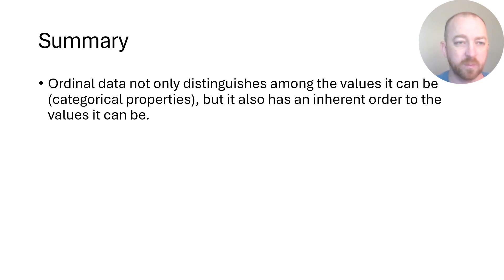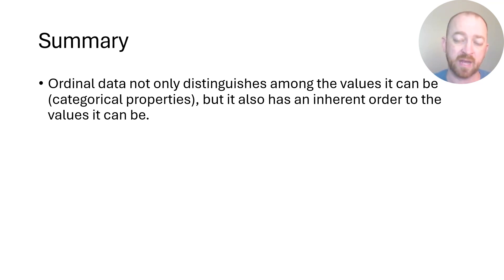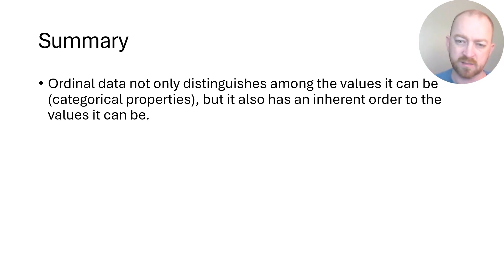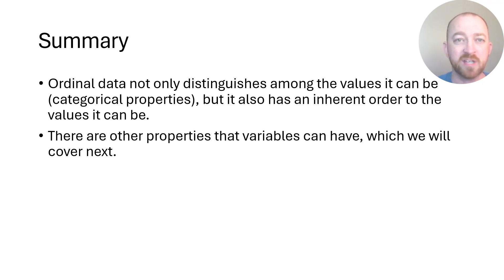A quick recap: ordinal data, just like categorical data, has categorical properties — meaning it distinguishes among the values it can take on — but ordinal data also has an inherent order to those values, and essentially everybody should be able to agree on what that order is. Sometimes the order will be reversed from yours, but it should go the same order — just mirrored. That's essentially it with ordinal data. We'll cover the rest of those properties of continuous data as we come up. Thank you very much — I'll see you next time.